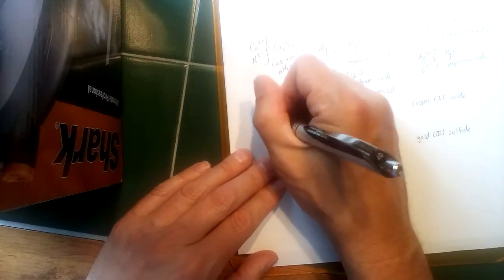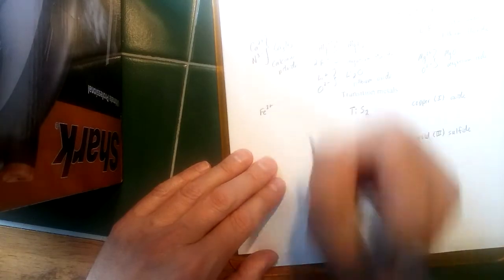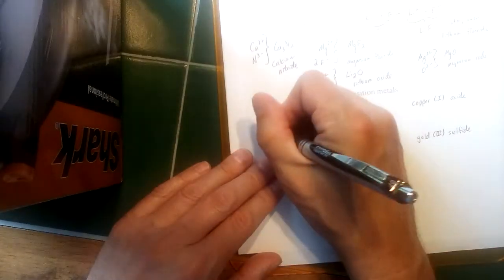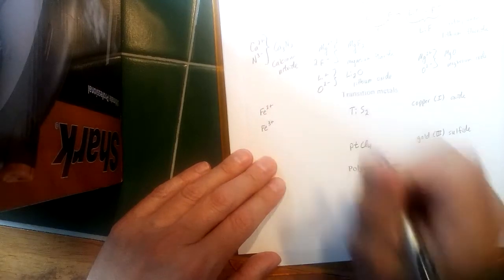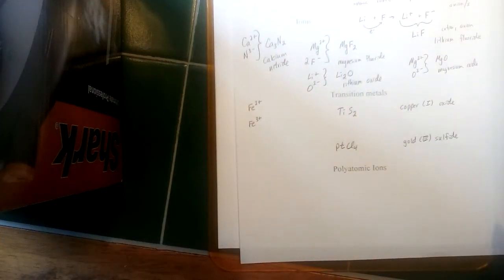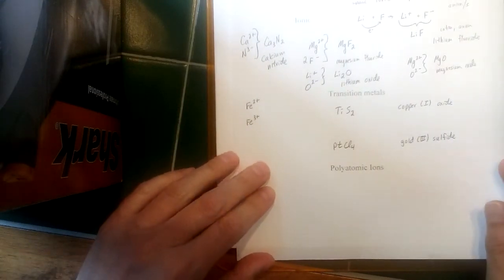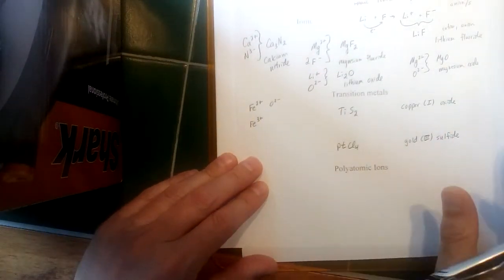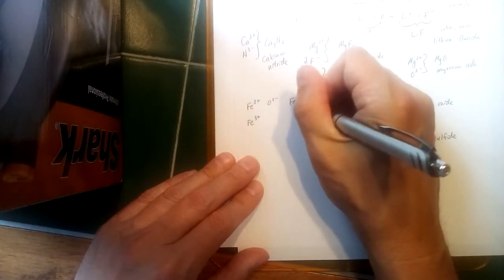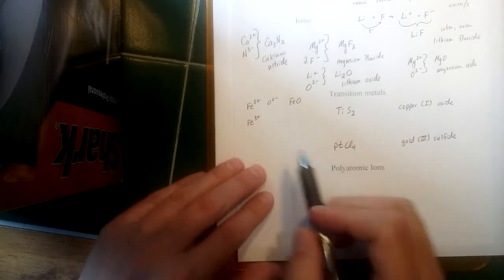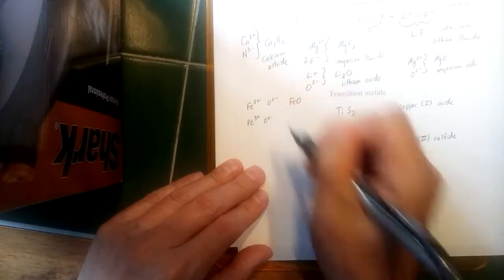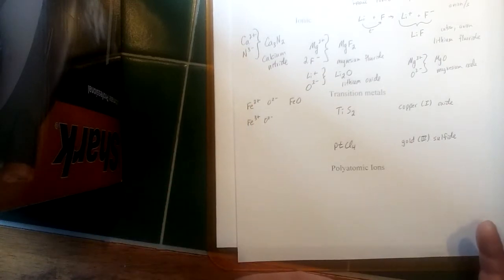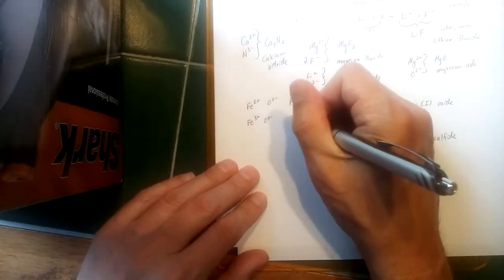So for iron there happen to be two. The two most common charges for iron are iron with a plus two charge and iron with a plus three charge. Now this means that when iron combines with a non-metal like oxygen, there's more than one possible formula. So if you take iron 2+ and combine it with oxide, which has a minus two charge, you get a formula of just one of each: FeO. That gets you to zero net charge. But iron 3+ when it combines with oxygen, we're not going to get a zero net charge until we reach the least common multiple of three and two, which is six. So that would be two irons, three oxygens.